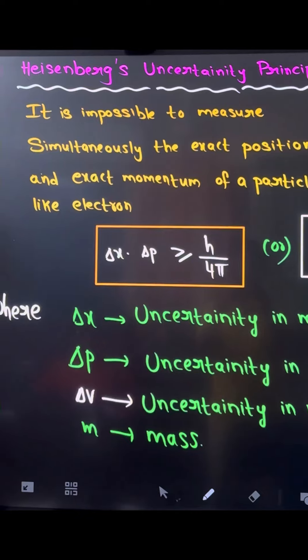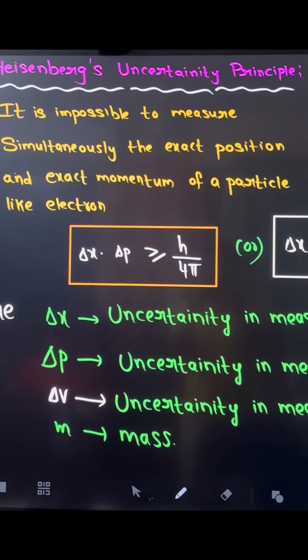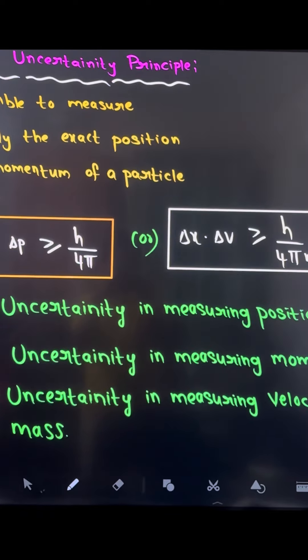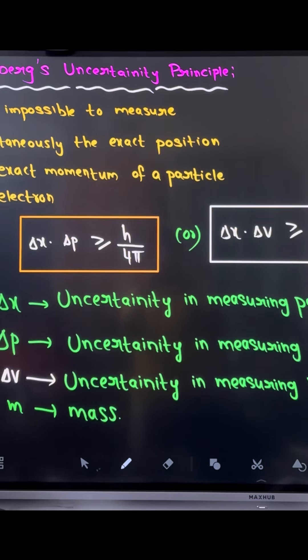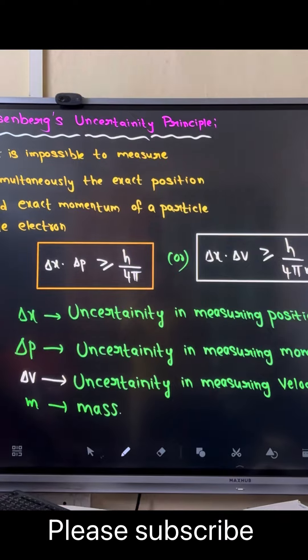Delta x into delta p greater than or equal to h by 4π. Delta x into delta v greater than or equal to h by 4πm. Where delta x is the uncertainty in measuring position, delta p is the uncertainty in measuring momentum, delta v is the uncertainty in measuring velocity, and m is the mass.